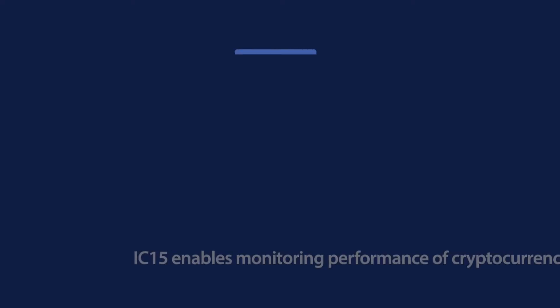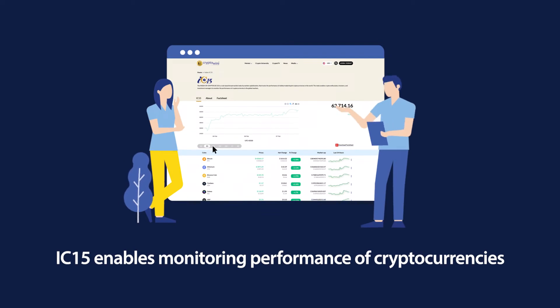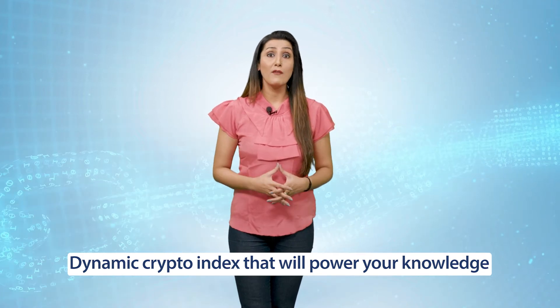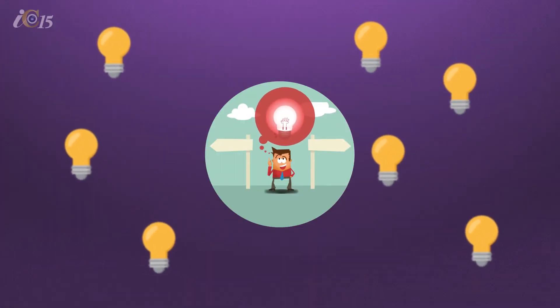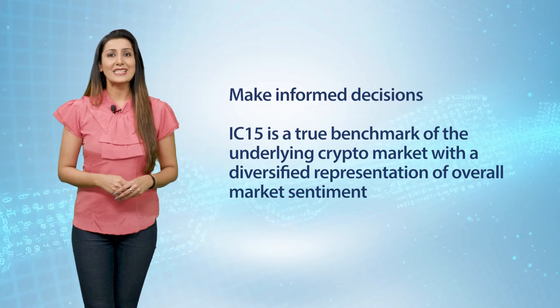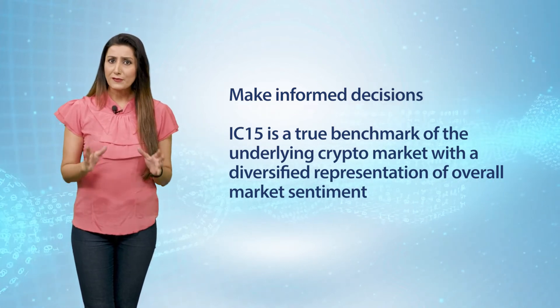Before we get into the index composition, let us first learn what IC15 can do for a market participant. This index enables crypto enthusiasts, investors, and investment managers to monitor the performance of cryptocurrencies in the global markets. IC15 is a dynamic crypto index that powers your knowledge and helps you benchmark the cryptocurrency market. It can be used to effectively follow market movement and make informed decisions based on well-researched quantitative metrics, providing a true benchmark with a diversified representation of overall market sentiment.